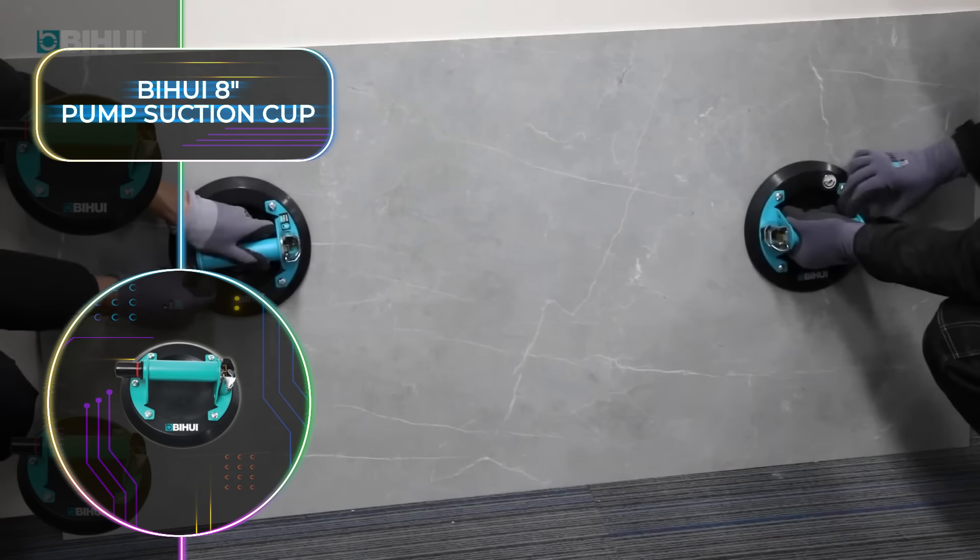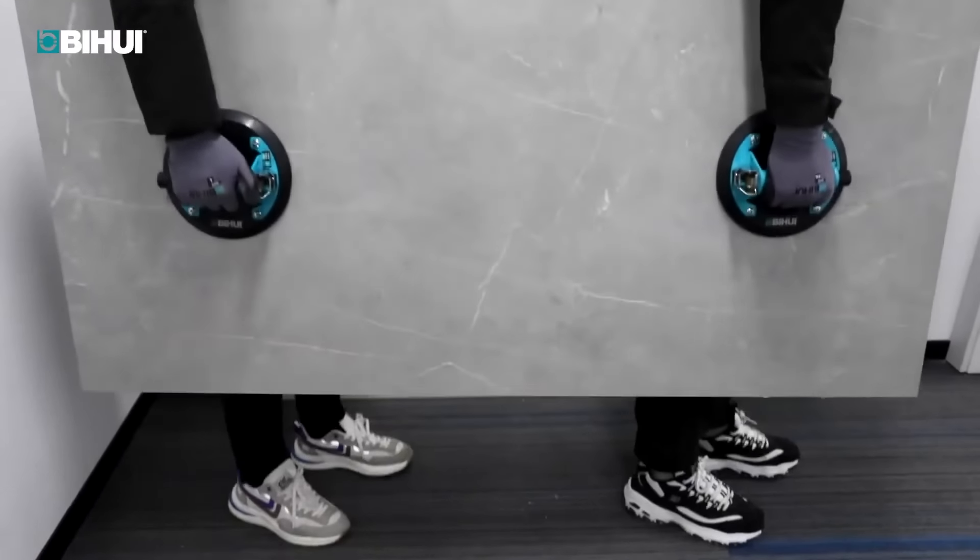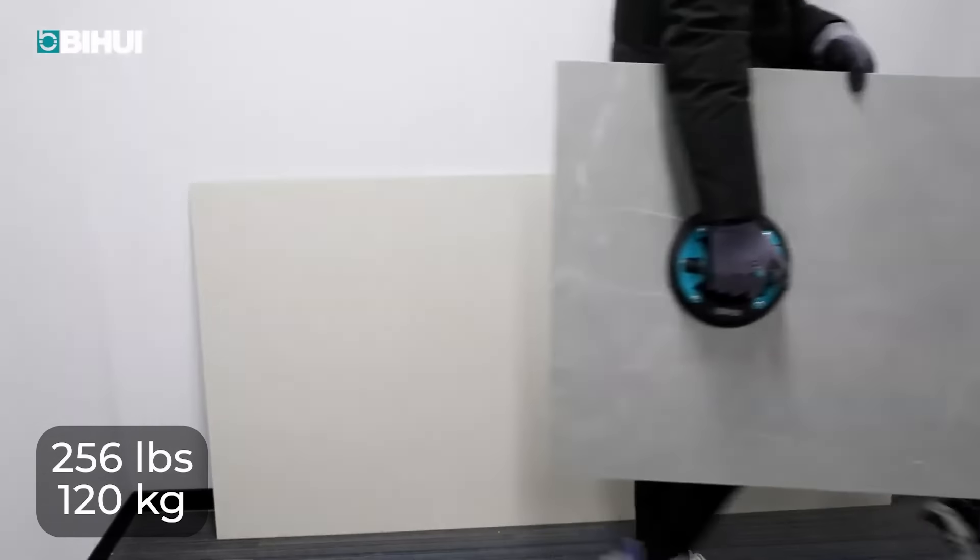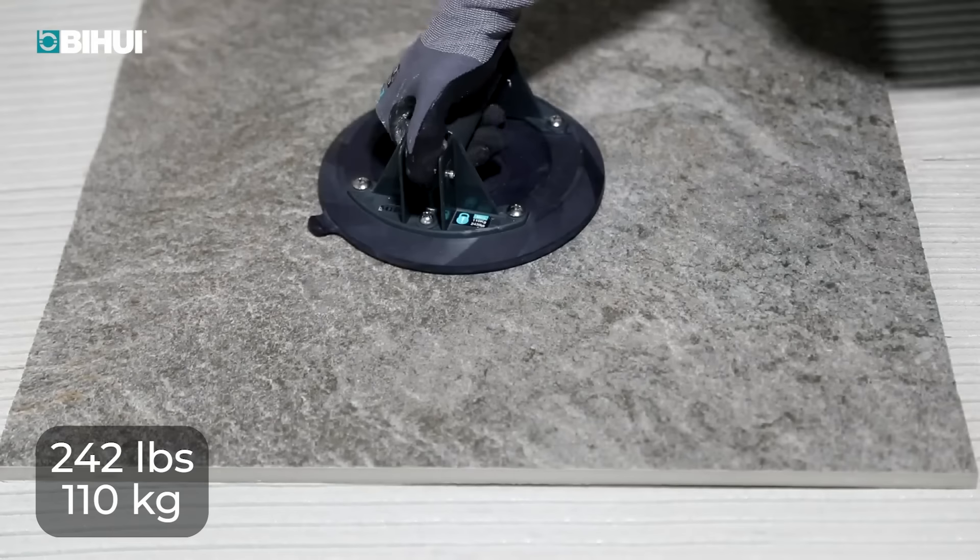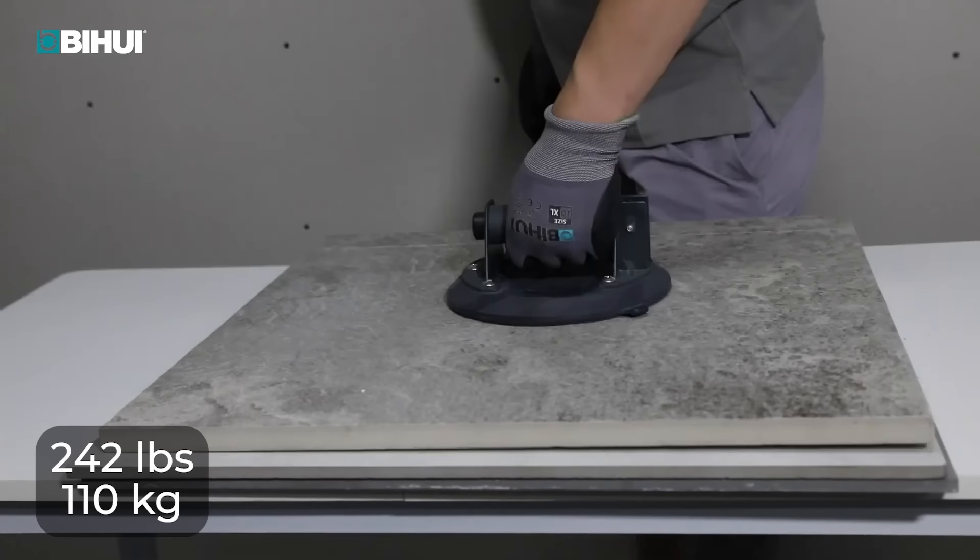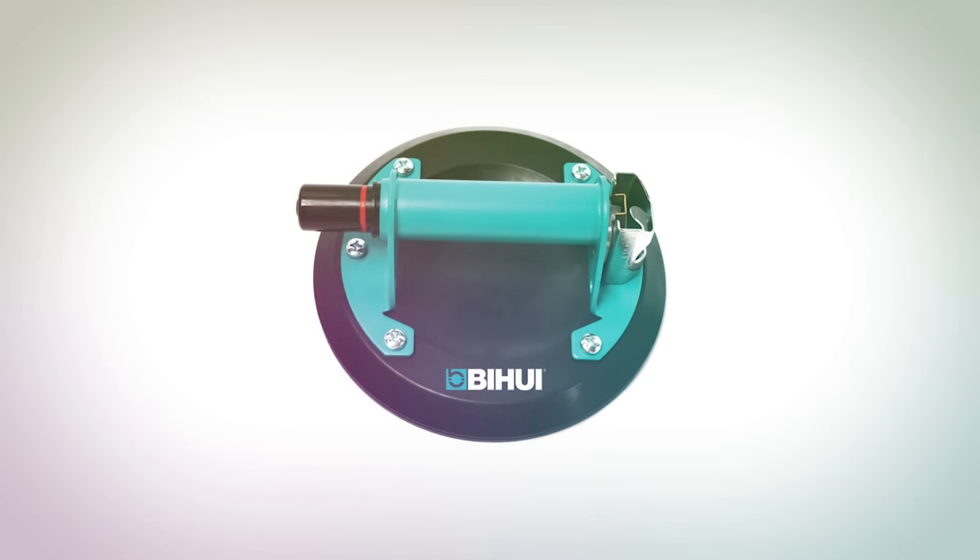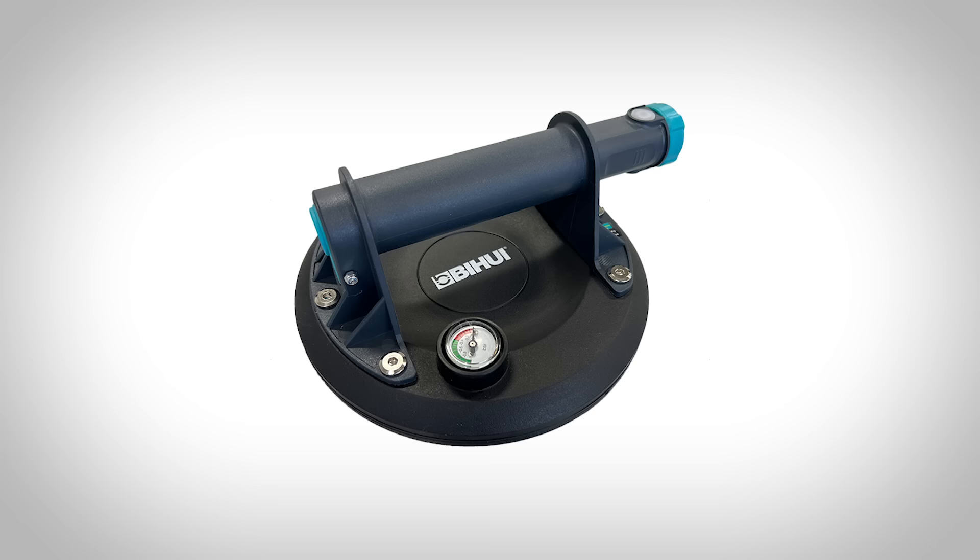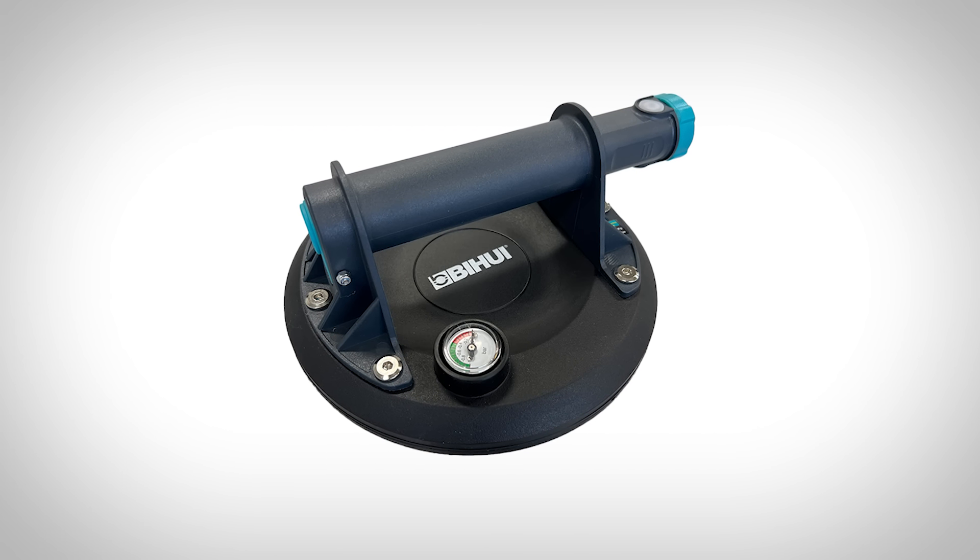It can be used on smooth and lightly textured surfaces and has a capacity of 265 pounds or 120 kilograms. Option two has a much simpler pump action system with a quick-release lever and offers a lifting capacity of 242 pounds or 110 kilograms. It has an anti-slip plastic handle for comfortable use and a red indicator on the handle.